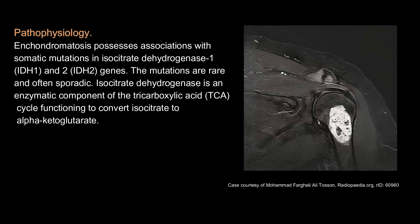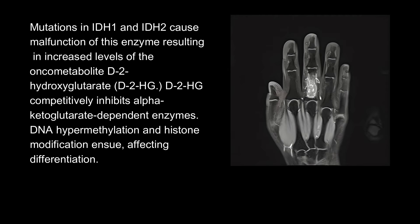Pathophysiology. Enchondromatosis possesses associations with somatic mutations in isocitrate dehydrogenase 1 (IDH1) and 2 (IDH2) genes. The mutations are rare and often sporadic. Isocitrate dehydrogenase is an enzymatic component of the tricarboxylic acid (TCA) cycle, functioning to convert isocitrate to alpha-ketoglutarate. Mutations in IDH1 and IDH2 cause malfunction of this enzyme, resulting in increased levels of the oncometabolite D-2-hydroxyglutarate (D2-HG). D2-HG competitively inhibits alpha-ketoglutarate-dependent enzymes. DNA hypermethylation and histone modification ensue, affecting differentiation.